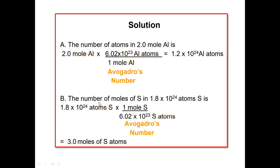For the second example: how many moles of sulfur are in 1.8 × 10²⁴ atoms of sulfur? Here the quantity of atoms is given as 1.8 × 10²⁴. We multiply 1.8 × 10²⁴ atoms of sulfur by 1 mole of sulfur divided by 6.02 × 10²³ sulfur atoms (Avogadro's number). The sulfur atoms cancel, and the answer is 3.0 moles of sulfur. You can calculate the number of moles expressed from the number of atoms using this method.